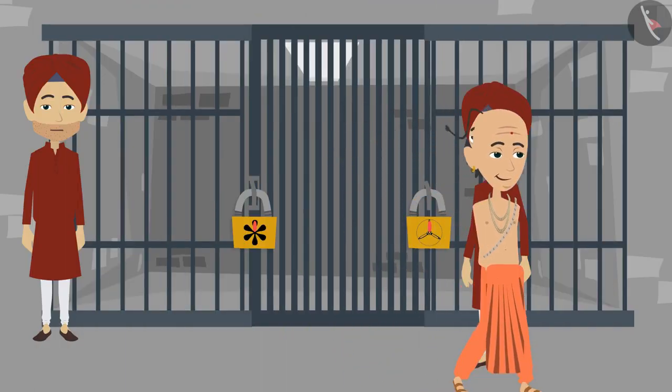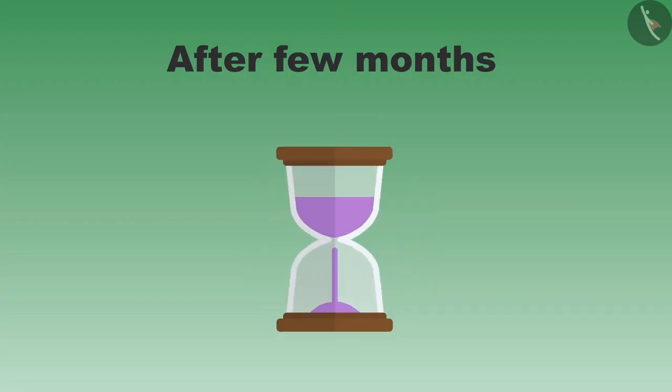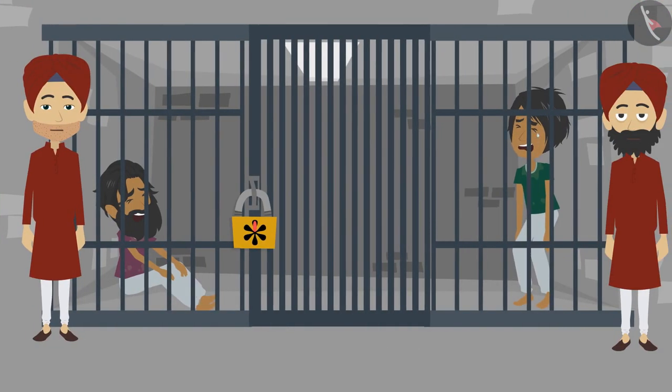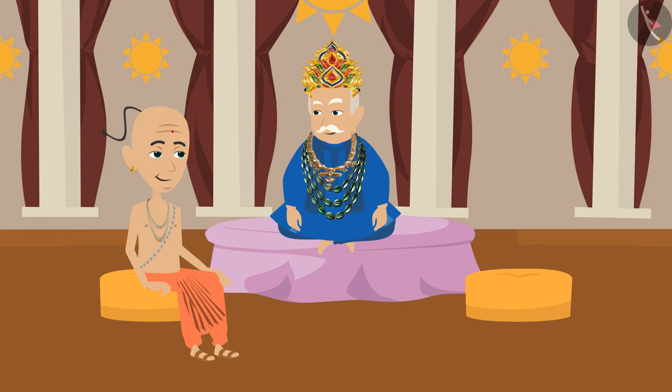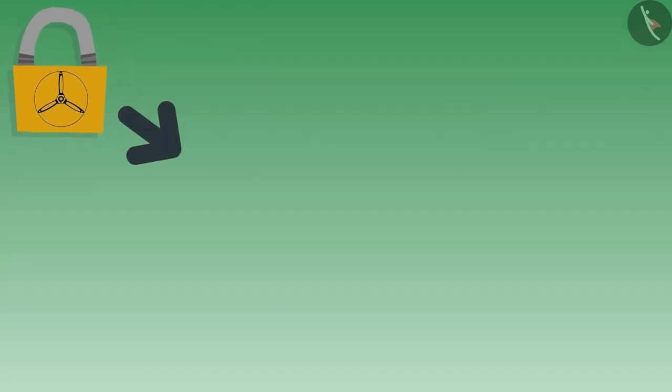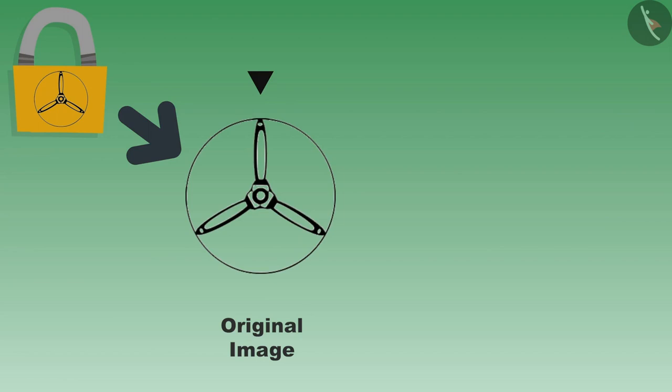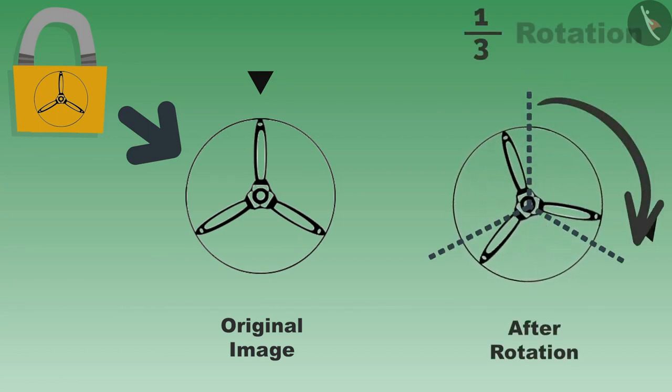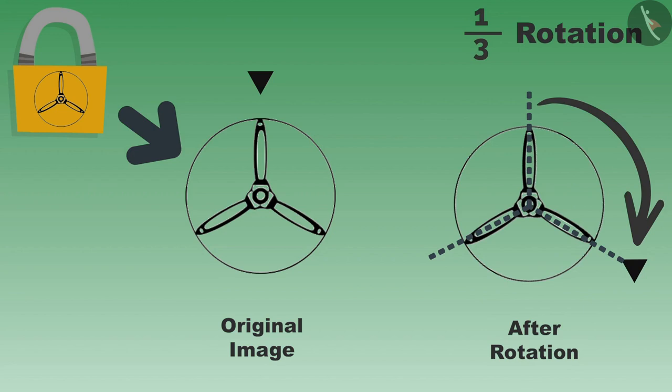Many months passed by but there was no report of any escape since then. The king asked Tenali Rama what he did to the locks. Tenali Rama replied, 'I keenly observed both locks. First, the shape of the first lock was such that it looked the same even after one-third rotation.'